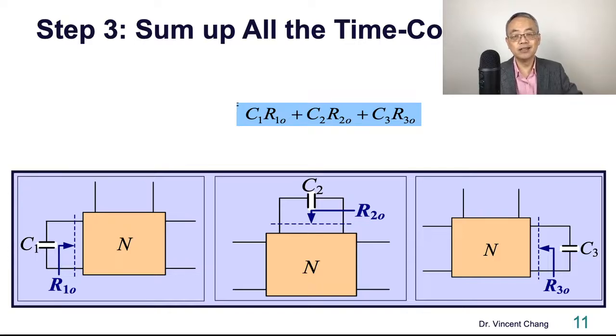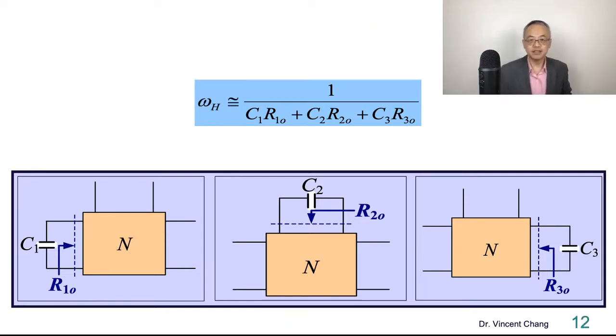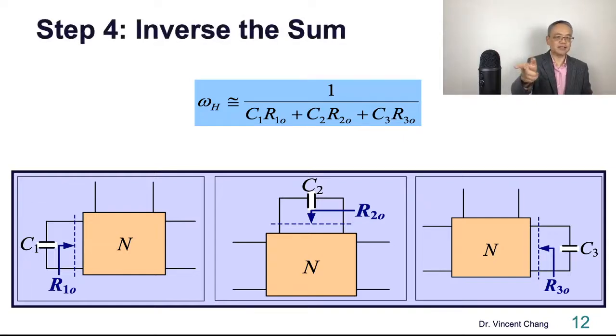The final one is easiest. What is the final one? You simply just put the sum, the result of step three into a denominator and calculate the inverse of the sum of the time constant. That's it. You simply inverse the sum you got from the previous step. So four steps. Which step is the key step? Inverse easy, sum easy, right?